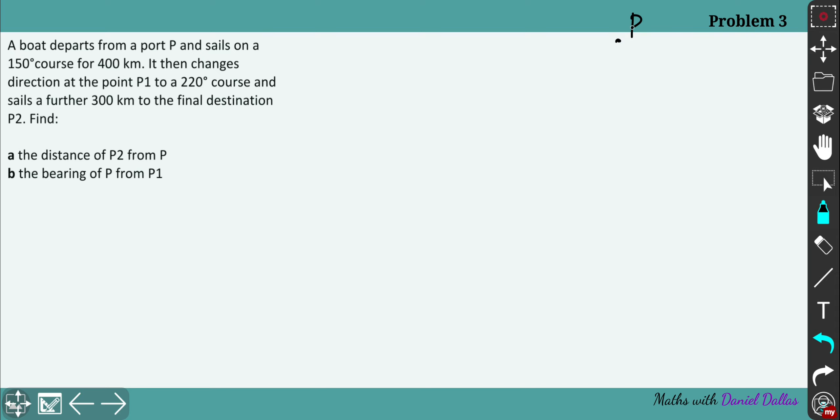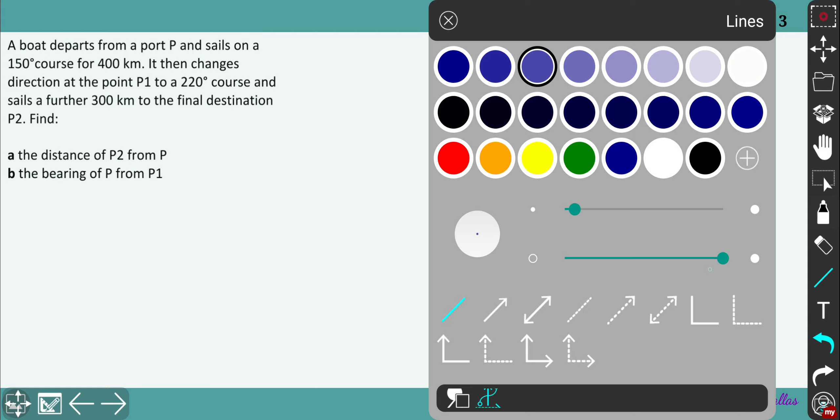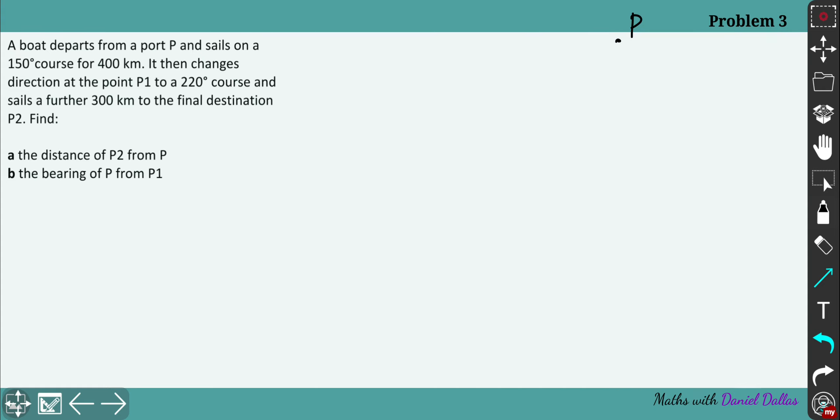So we have initial point P, then we have the first set of north direction immediately right there, and now we have a course 150 degrees. So I'll do it more precisely, so I think that angle is okay. So let it be 150 degrees and 400 kilometers, so we'll set up that this is 400 kilometers.